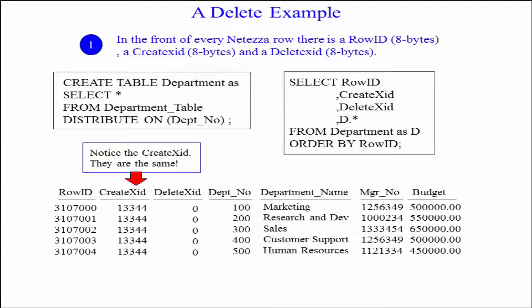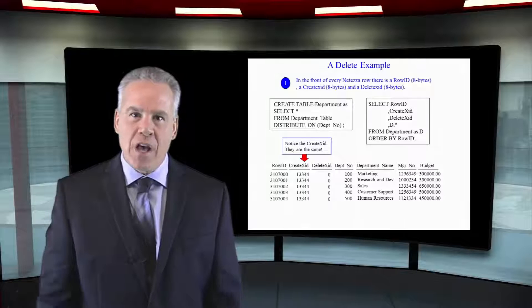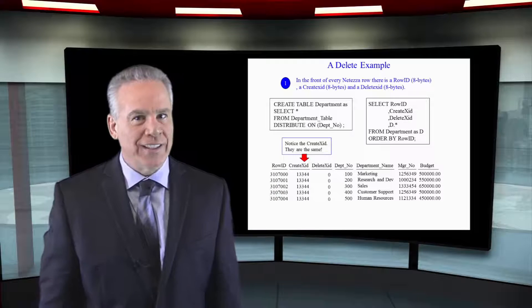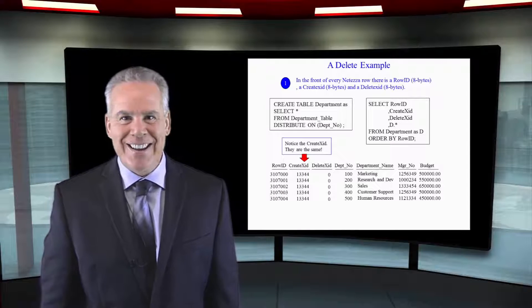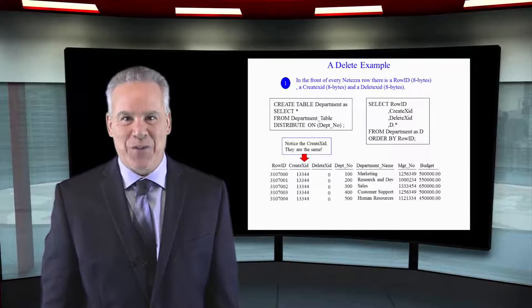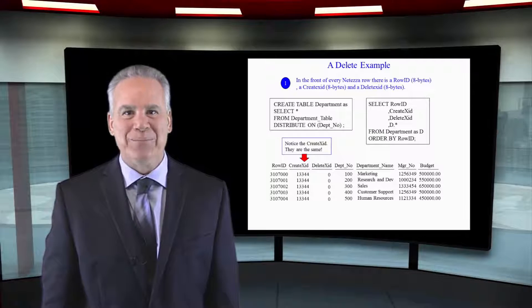The row ID came because we hashed the distribution key of Depno. Now take a look at the create XID. Why is it the same? Because in this one transaction, all of those rows were created. Notice that we have all zeros in the delete XID because nothing's been deleted yet. Just focus on that — we're all set up.